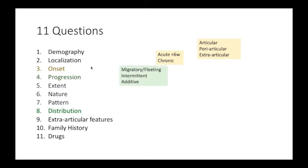While determining the progression or the nature or the character, we would like to know whether it is migratory or fleeting arthritis. Migratory or fleeting means one joint is involved, then it recovers, and then another joint is involved, which recovers or shows signs of recovery, and a third joint gets involved. That is the pattern of a fleeting or migratory arthritis.